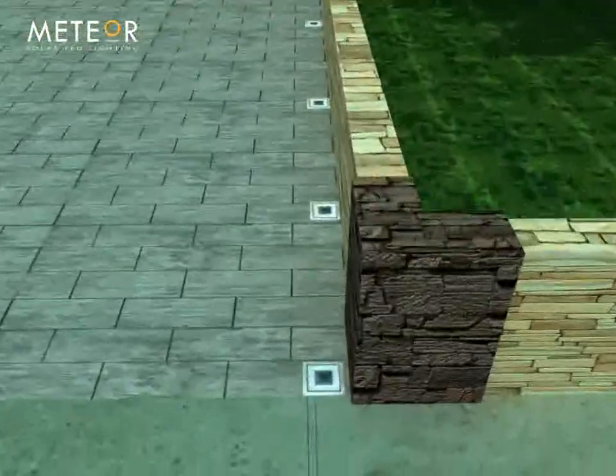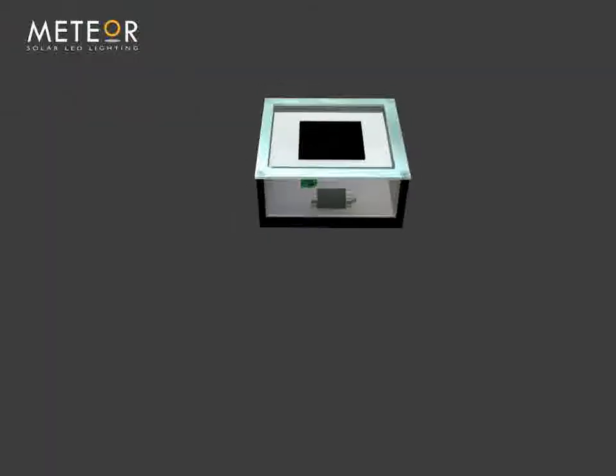During daylight hours, meteor lights take advantage of built-in solar panels to absorb energy.